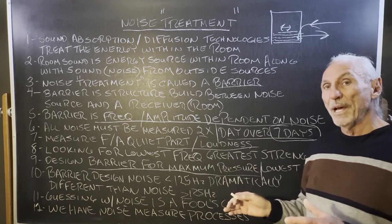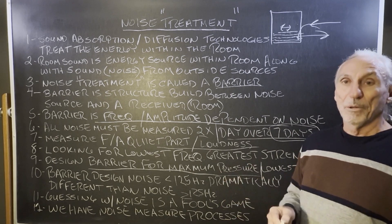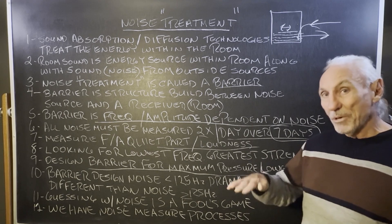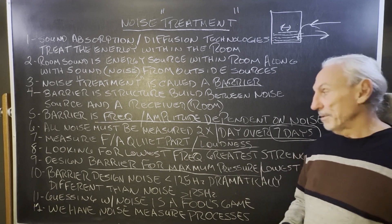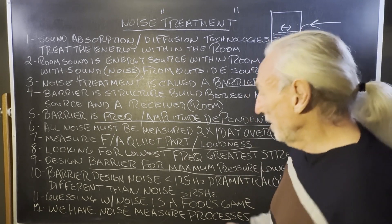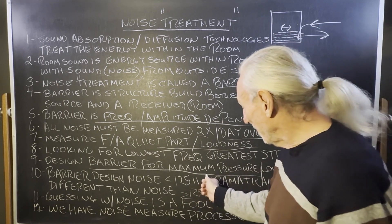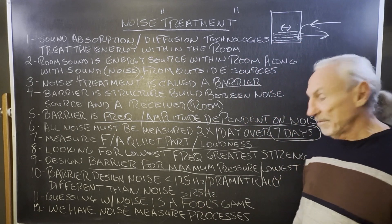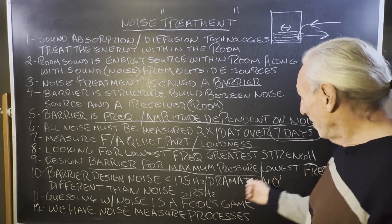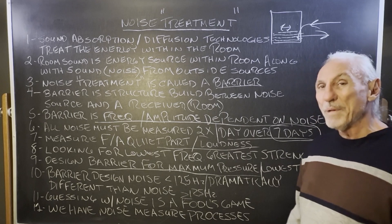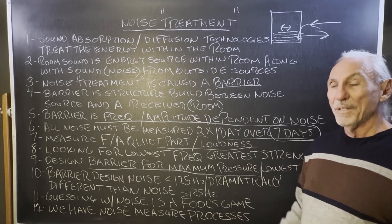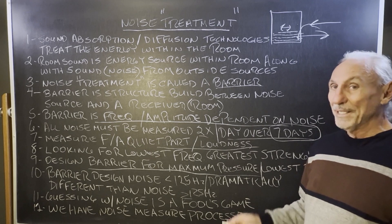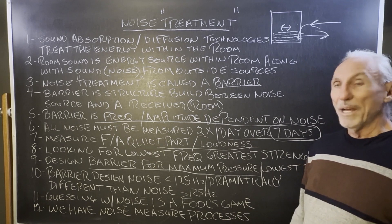We design the barrier for that maximum pressure — the lowest frequency and highest amplitude — and then everything else below that will fall into place. Barrier design for noise less than 125 Hz versus noise above 125 Hz is dramatically different: different in materials, different in thickness and density, all kinds of issues.